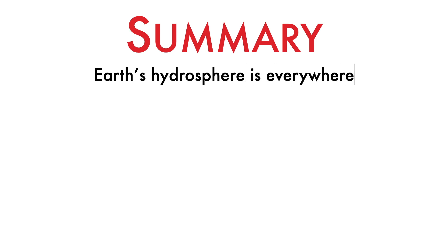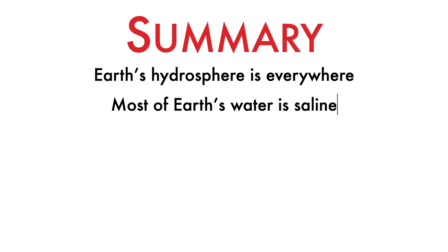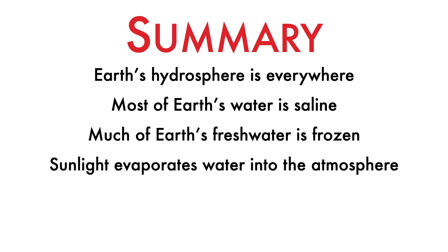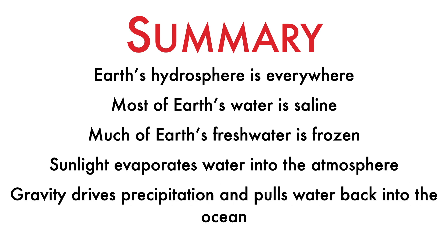So to recap: the hydrosphere is everywhere and can be found in reservoirs in the air, on the ground, and underground. Most of Earth's water is saline or salty and is found in the ocean. A much smaller percentage of the hydrosphere is comprised of freshwater, and most of that is locked in frozen ice caps and glaciers. Sunlight provides the evaporating energy to remove water from Earth's reservoirs and into the atmosphere, and gravity drives precipitation and causes water to eventually flow back into the ocean. That wraps up our video on the hydrologic cycle. I hope you enjoyed it and look forward to seeing you next time. Until then, Ad Astra.